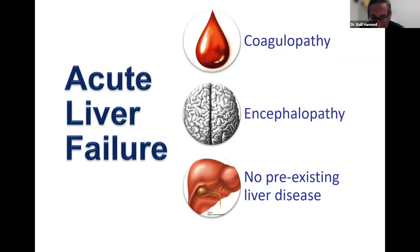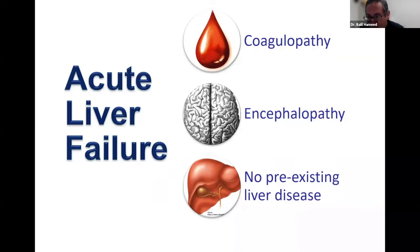Coagulopathy is one of the important aspects. The second is development of hepatic encephalopathy — when toxins build up because of the liver failure, especially ammonia. These patients can have different scenarios, and we'll talk about the grading of hepatic encephalopathy in patients with no pre-existing liver disease.